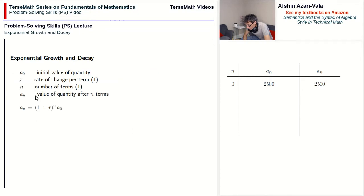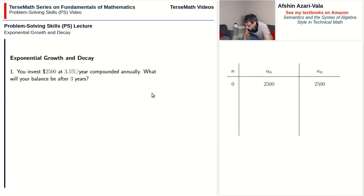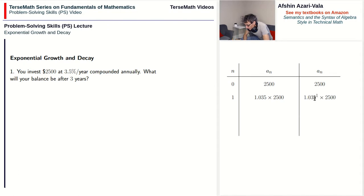In the equations, a₀ is the initial value of the quantity — in this case the two thousand five hundred dollars you invested. After one year we earned one hundred and three point five percent of the money that we invested. This is similar to a grand total problem, like when we multiplied a price by 1.13 for a thirteen percent tax rate. In this case it's three point five percent, so we multiply the initial amount by one hundred and three point five percent, which converts to 1.035, giving us 1.035 to the power of one times two thousand five hundred.